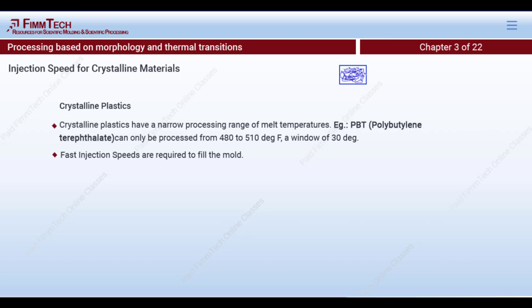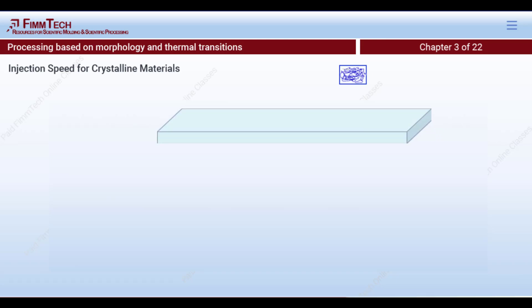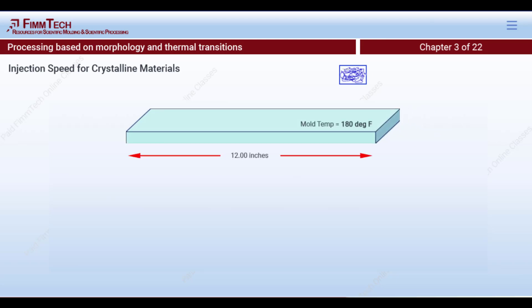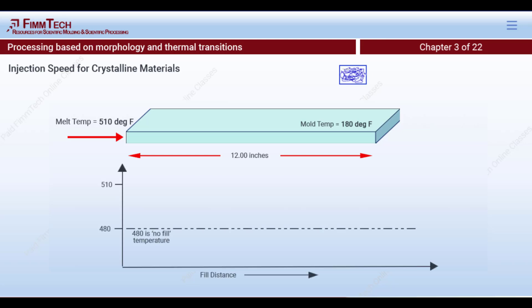Because of this small window, we need to use fast injection speeds to fill the mold. Visualize a part that is 12 inches long. If you start injecting the plastic from one end at a melt temperature of 510°F and inject really slowly, by the time the melt reaches the center of the mold it will cool off, and you won't be able to fill the rest of the mold.